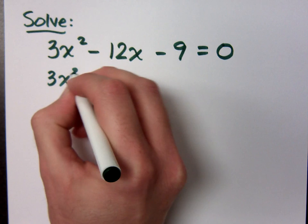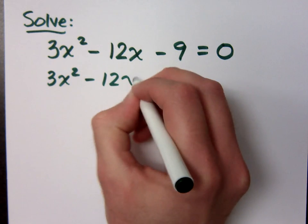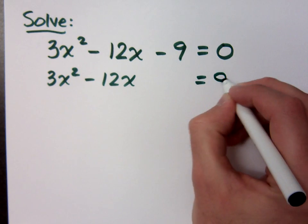You need to get the variables by themselves on one side. So that equals 9.